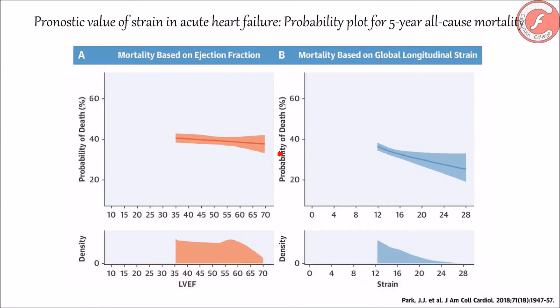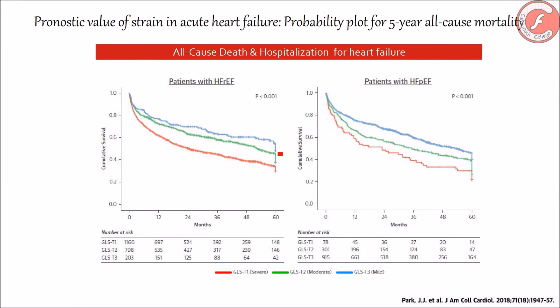Heart failure. The global longitudinal strain has proven to be a strong prognostic factor regarding mortality and other adverse cardiovascular events up to 5 years, both in patients with heart failure with reduced ejection fraction and in patients with preserved ejection fraction. It is in this last case where the global longitudinal strain takes on special importance, because classic echocardiographic parameters can be imprecise in this scenario, with mistakes occurring in certain occasions.